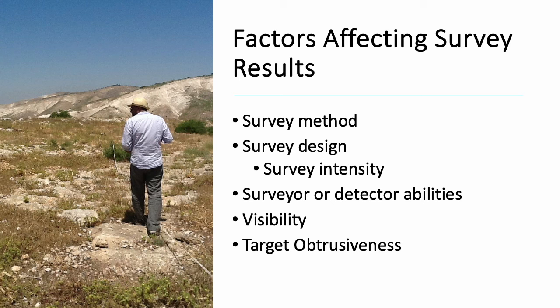Some of the specific factors that can affect the results of a survey include the choice of method, the survey design in terms of distribution and shape of units, the abilities of the surveyor or detector used, visibility—which has to do with how much artifacts on the ground might be obscured—and target obtrusiveness, which has to do with properties inherent in the target we're trying to survey for.